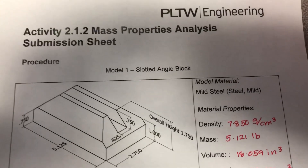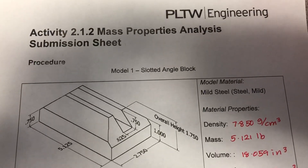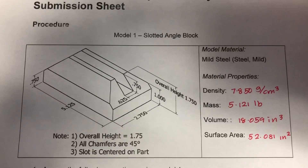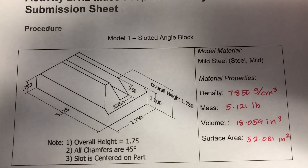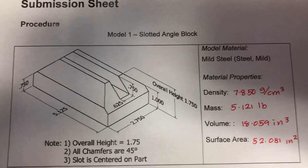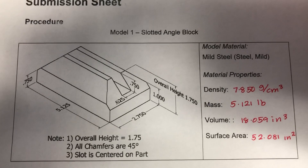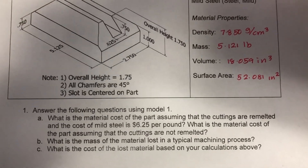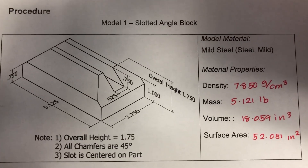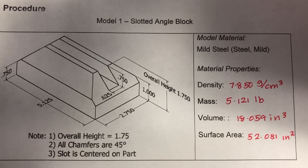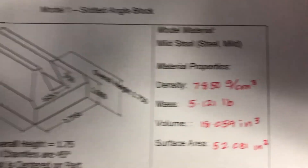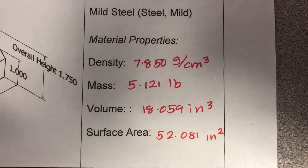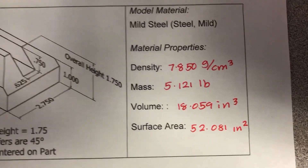Activity 2.1.2 mass properties analysis isn't just about drawing all of the models in Autodesk Inventor — it has some follow-up questions that you need to answer. Given the drawing and the material properties of mild steel that you obtained from the iProperties of Autodesk Inventor, we need to find answers to several cost and mass questions.